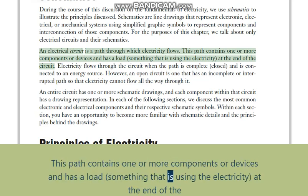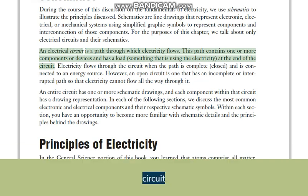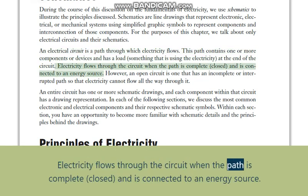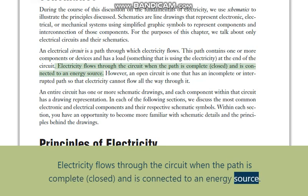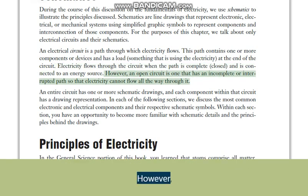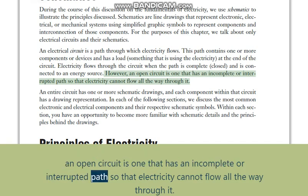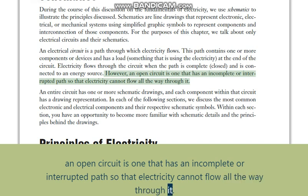An electrical circuit is a path through which electricity flows. This path contains one or more components or devices and has a load — something that is using the electricity — at the end of the circuit. Electricity flows through the circuit when the path is complete (closed) and is connected to an energy source. However, an open circuit is one that has an incomplete or interrupted path so that electricity cannot flow all the way through it.